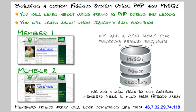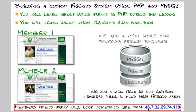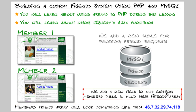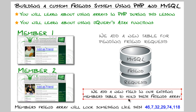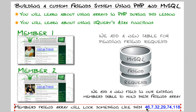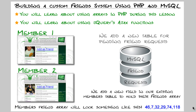This MySQL friend request table is not going to hold the full friends lists — it's just for pending requests. This keeps the system streamlined without unnecessary rows or fields. Instead, we're going to house the friends data as an array: each member will have a new field added to their existing members table to hold their friends array.